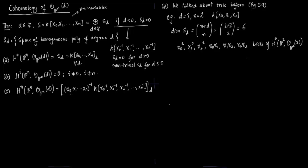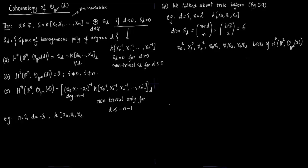Now let us come to part C. First notice the degree here is −n−1, which is inside the graded part. We have seen that non-trivial parts will only occur for d ≤ 0, but since we divide by the product x0·x1·...·xn, it will only be non-trivial for d ≤ −n−1. This division by (x0·x1·...·xn)^{-1} requires careful interpretation.